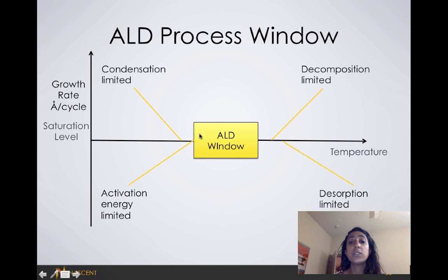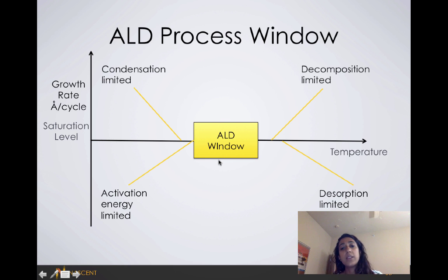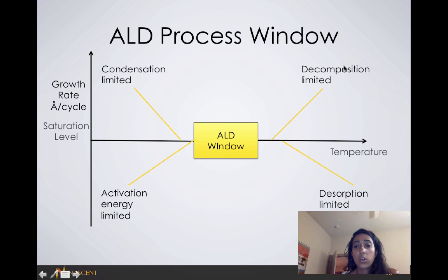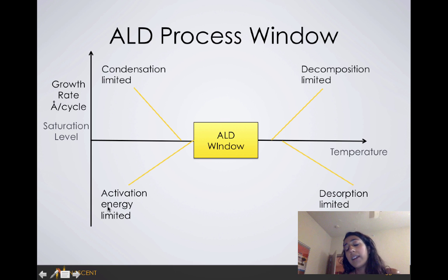So there is what you call an ALD window — the set of temperatures at which the ALD process works best. You want to be at a point where the temperature is not too high so that your precursors decompose, but high enough to overcome the activation energy required for the reaction.